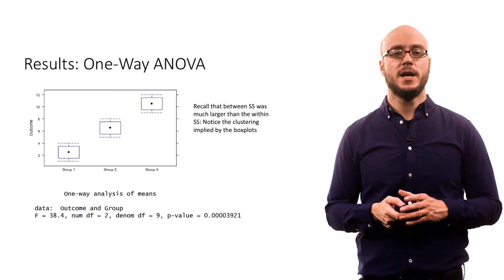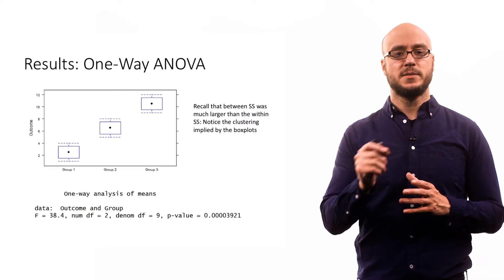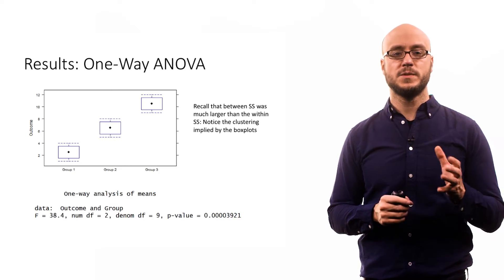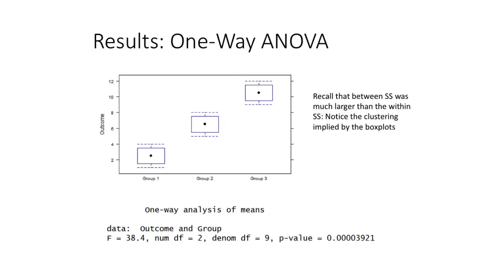A good way to do that is to use box plots. So here we have box plots for each of these different groups. We have groups 1, 2, and 3. This is just using the same toy data set, and we can see that we have these different distributions.